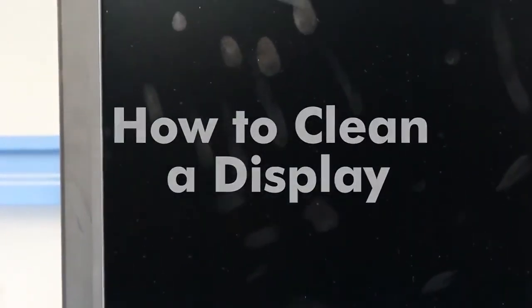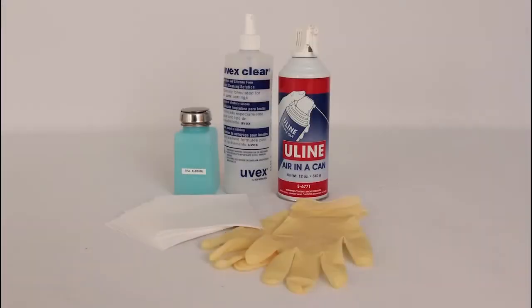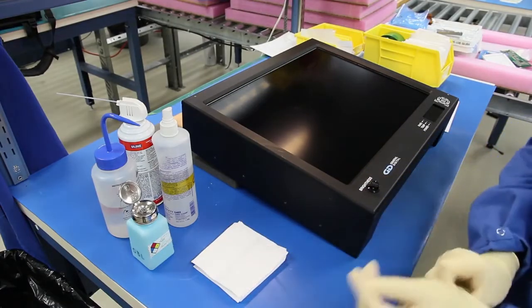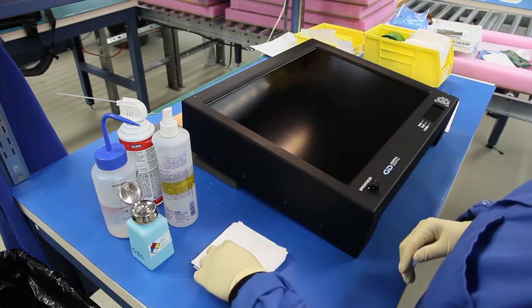First, let's review the supplies you'll need: a pair of oil-free gloves, glass cleaner (here at General Digital we use UVX and alcohol), canned air, and lint-free wipes. Now that you've got everything needed, let's walk through the cleaning process step-by-step.